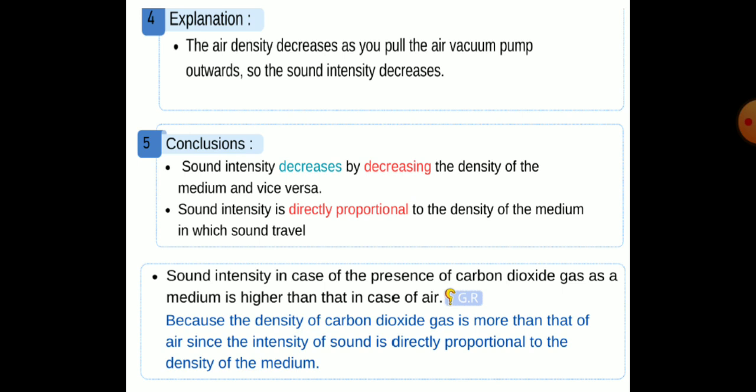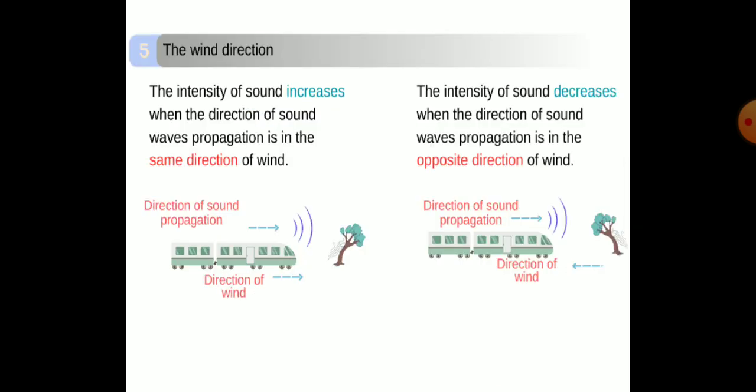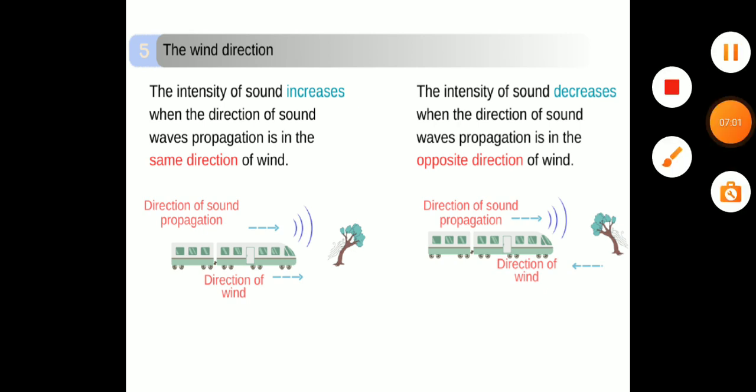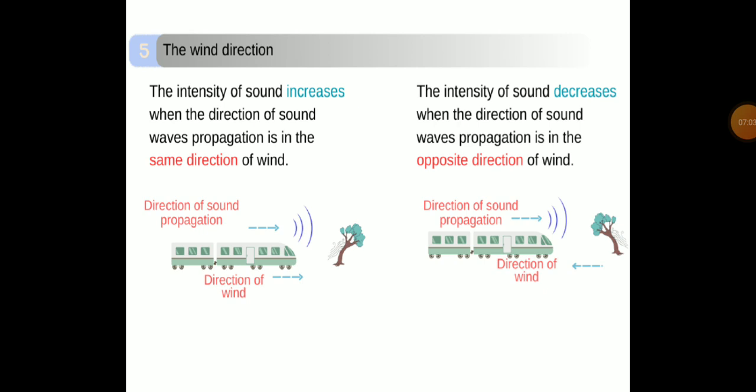Number five: the wind direction. The intensity of sound increases when the direction of sound wave propagation is in the same direction as the wind. The intensity of sound decreases when the direction of sound wave propagation is in the opposite direction of the wind.